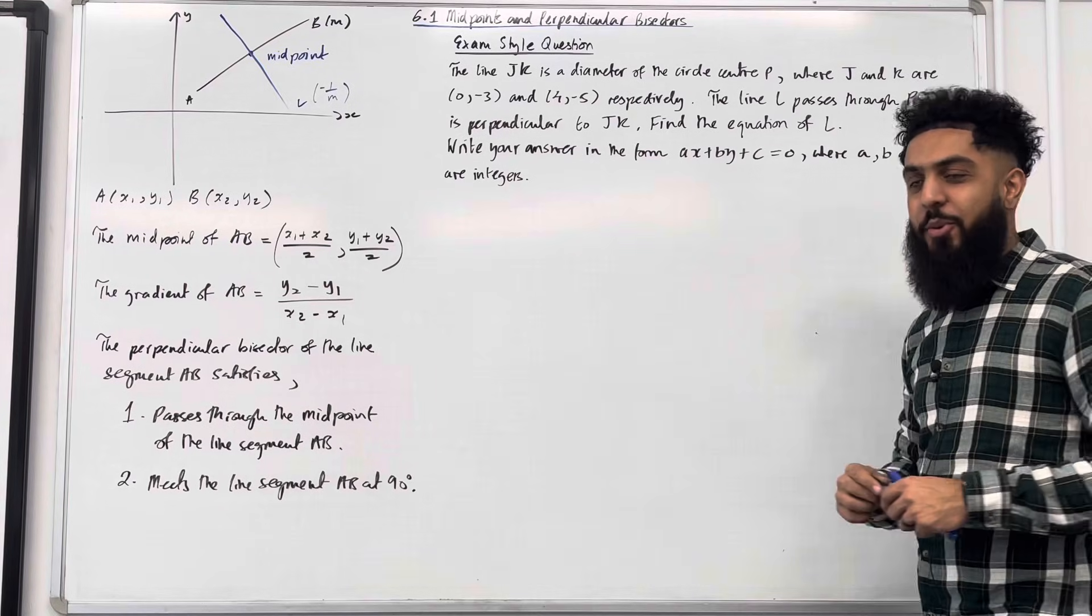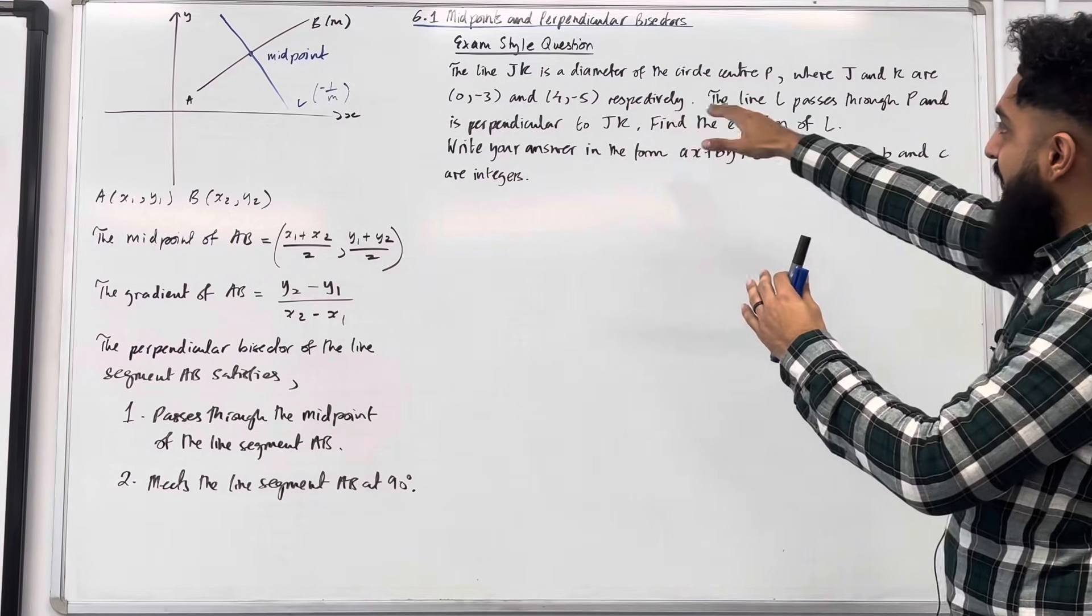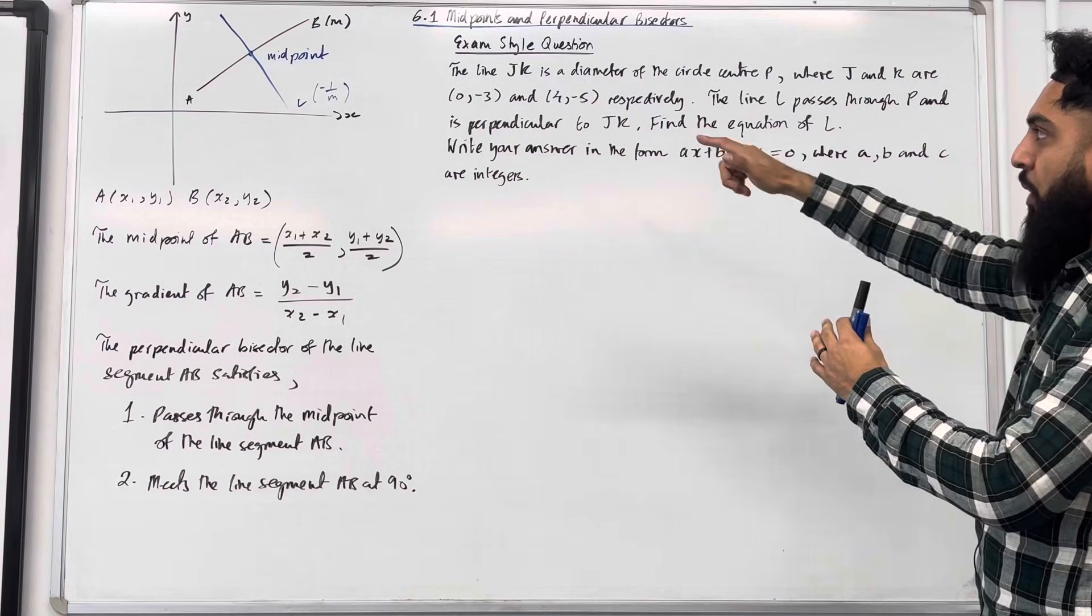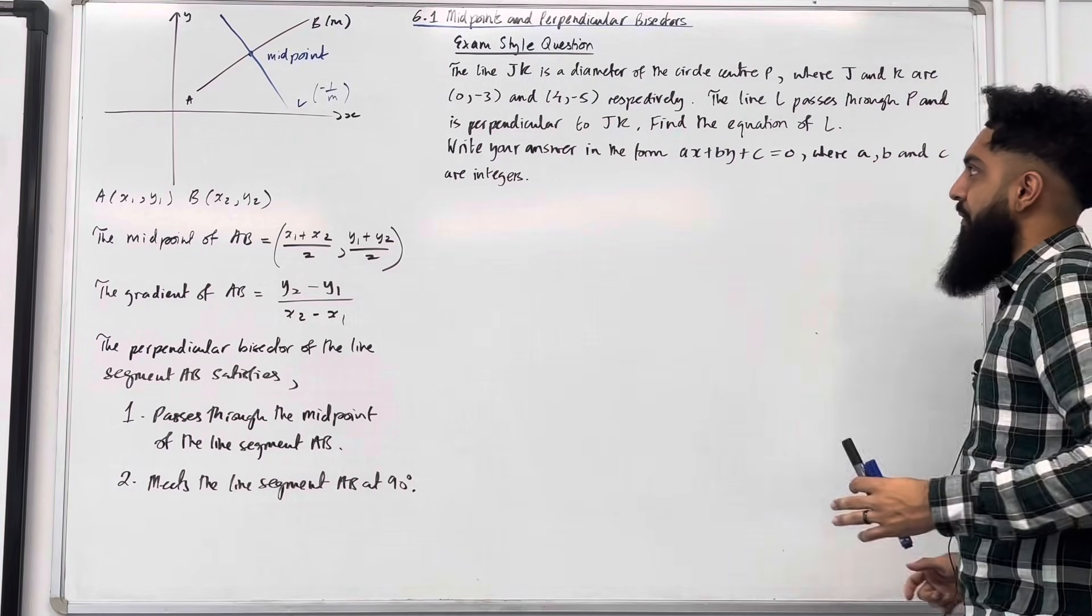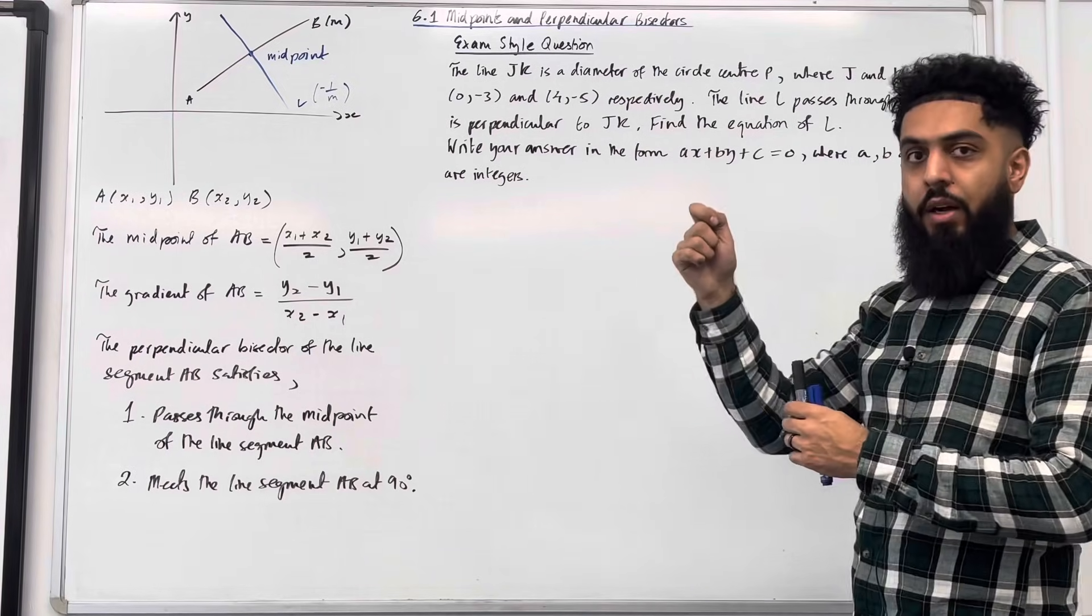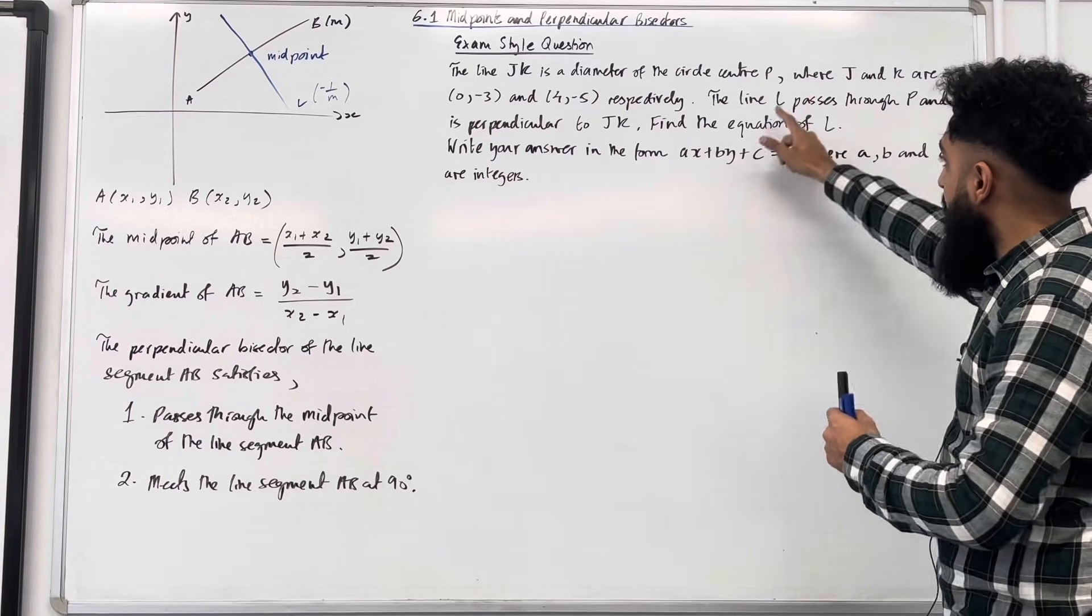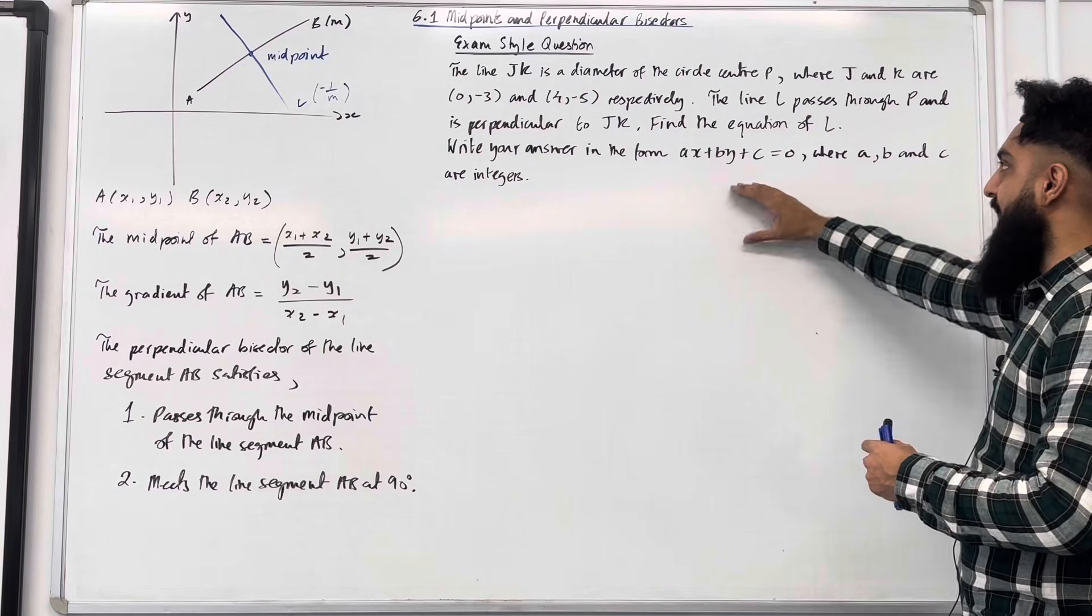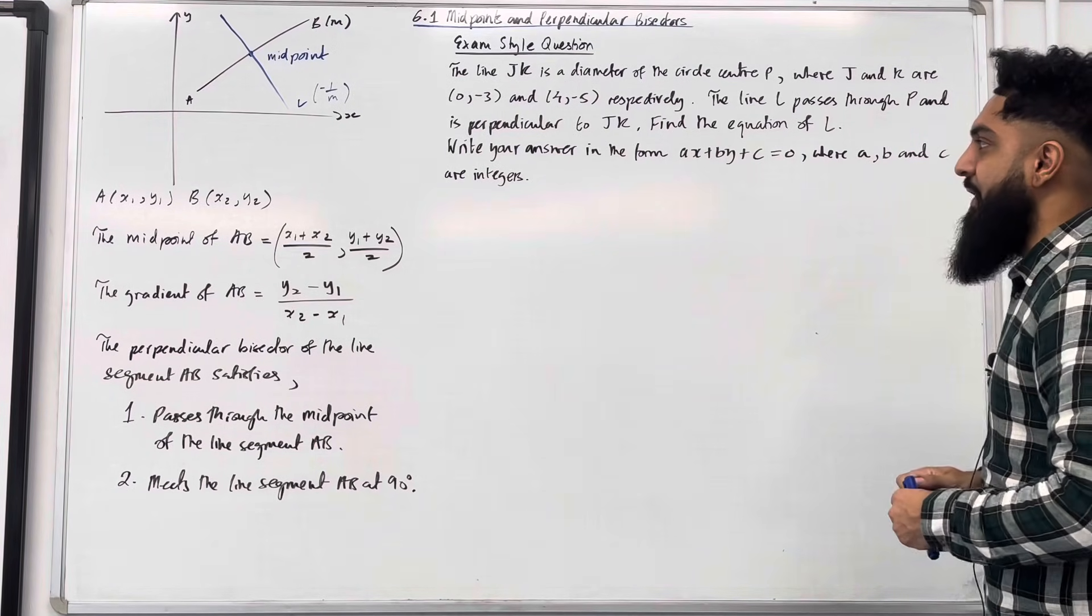Here is an exam style question. The line JK is the diameter of the circle centre P, where J and K are coordinates 0, minus 3, and 4, minus 5, respectively. The line L passes through P and is perpendicular to JK. Find the equation of L, write your answer in the form AX plus BY plus C equal to 0, where A, B and C are integers.